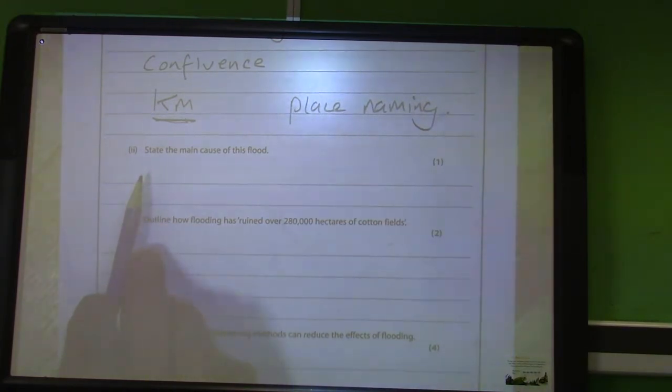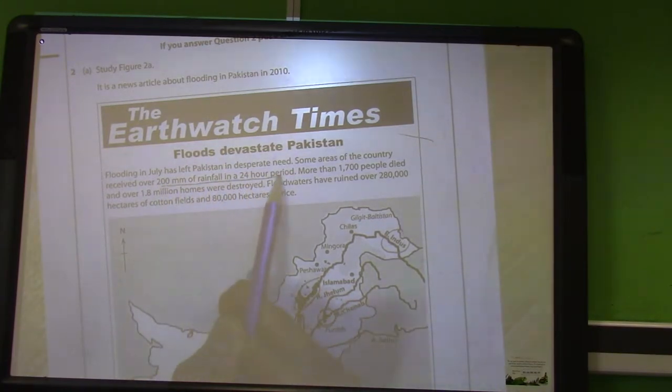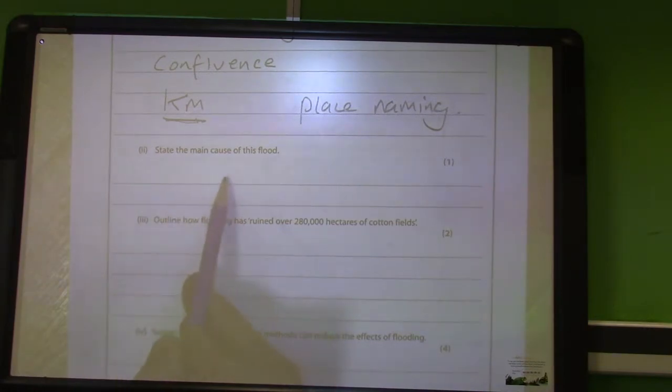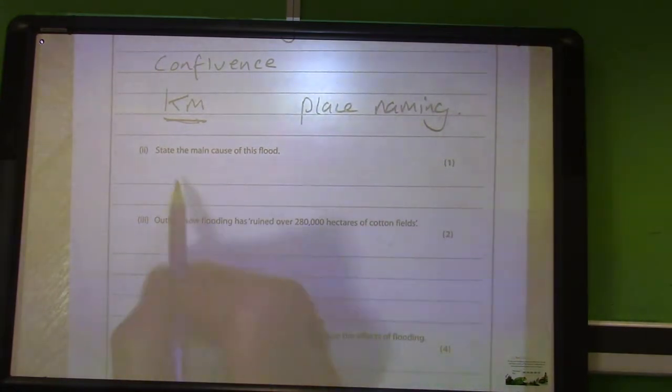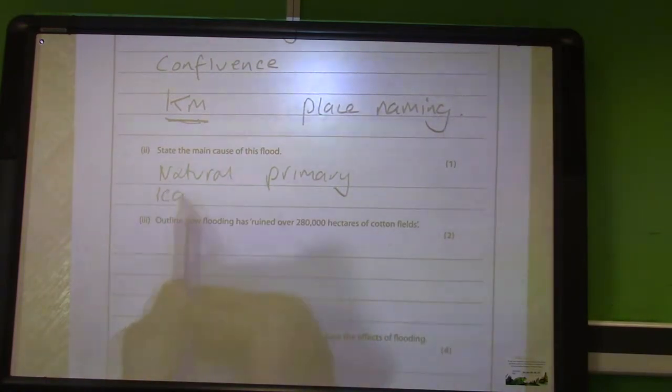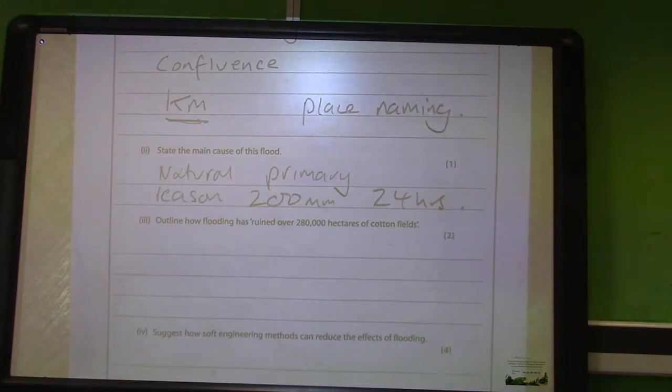I'm going to do an easy question now. To state the main causes of the flood, we are looking at physical reasons here, the main physical natural reason. The primary natural reason for flooding is always heavy rainfall. If we go and look back at that, it says the country received 200 millimeters of rainfall in a 24 hour period. So the main cause of the flooding was a primary natural cause of very heavy rainfall in a short space of time, 200 millimeters in 24 hours.